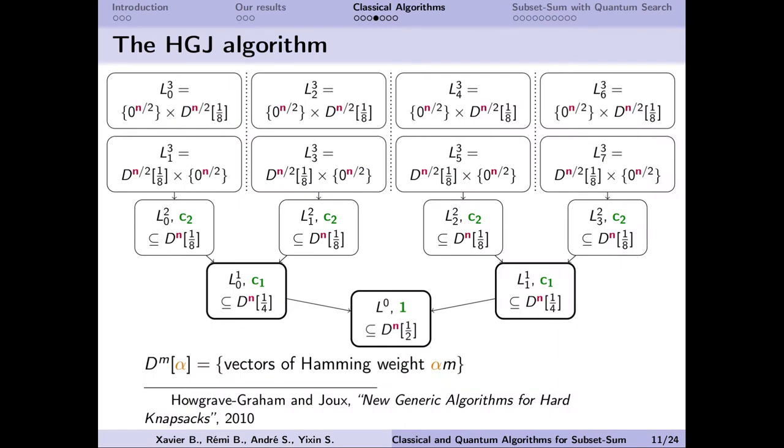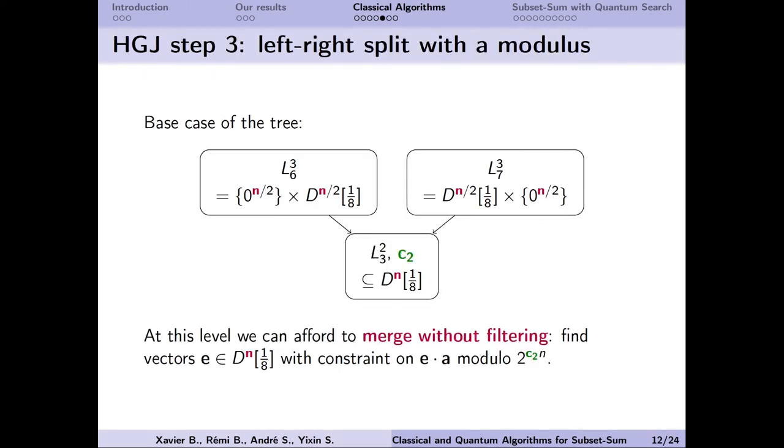The algorithm introduced by Howgrave-Graham and Joux implemented this idea. It can be represented by a tree where each level can be seen as a step of merging and filtering. Here we introduce the notation D(m,alpha), which is the set of vectors of length m and of Hamming weight alpha m. The top level of the tree is a little bit different. We can start with vectors where the first half or the second half of the coordinates are all 0 and merge them together. Then the merged vectors have directly the required weight. We only need to verify the modulo constraints. This is an easy way to construct a list of vectors which satisfy both a weight and a modulo constraint.